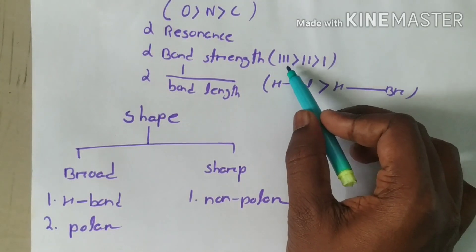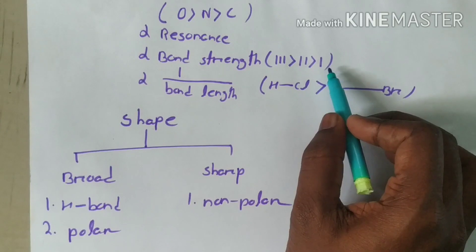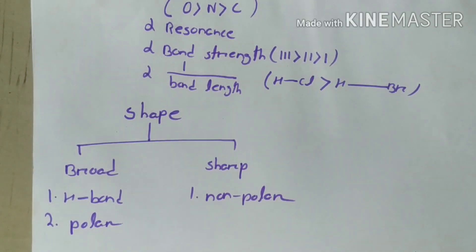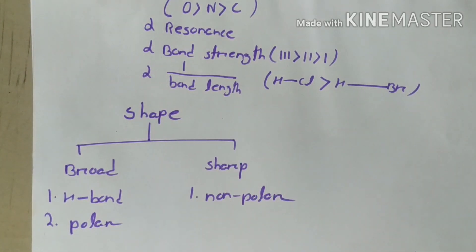We all know triple bonds have more bond strength than double bonds and single bonds. Hence, triple bonds have more intensity.